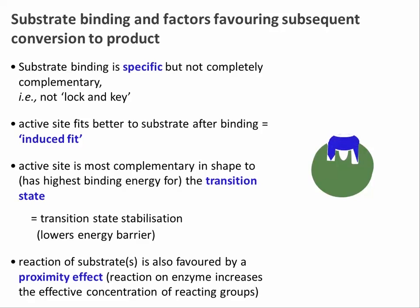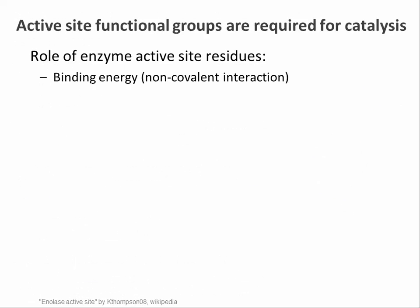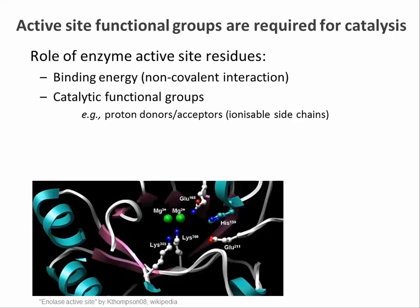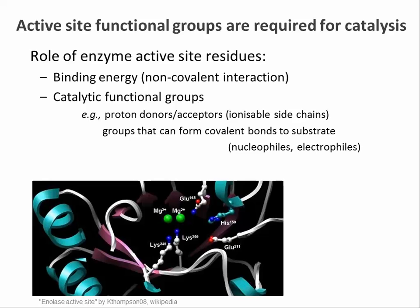To help with binding and conversion of substrate molecules, the amino acid residues of the active site of enzymes contribute to binding by non-covalent interactions as well as catalysis. The latter can happen in a number of ways. Some side chains are good proton donors or acceptors. For example, in the figure below, lysine as proton acceptor and glutamic acid as proton donor are essential for this enzyme called enolase. Some active site residues can transiently form covalent bonds with the substrate. And finally, many enzymes have metal ions in their active sites such as magnesium in the figure below, and these are held in place with active site glutamate and aspartate residues, or for heavy metals, cysteine and histidine.